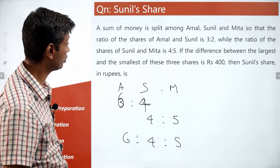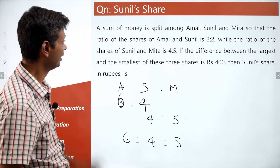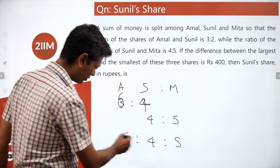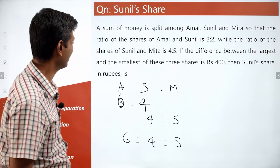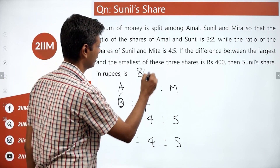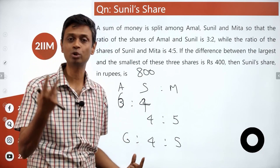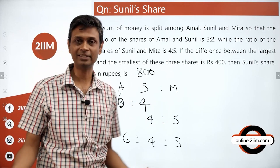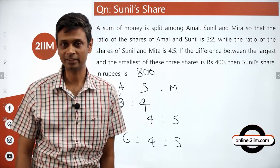The largest and smallest shares differ by ₹400. The difference between those two values is 2 units, so 2 units = ₹400, and 4 units = ₹800. Since 6 and 4 differ by 2, and 2 units correspond to ₹400, Sunil gets 4 units, which is ₹800.